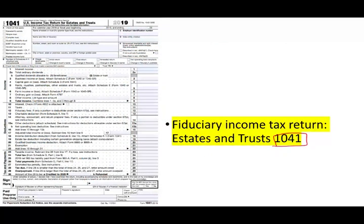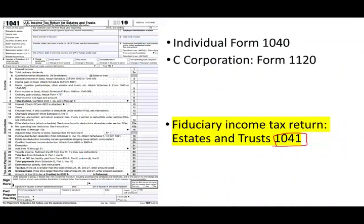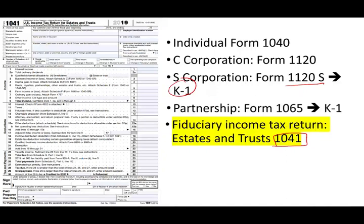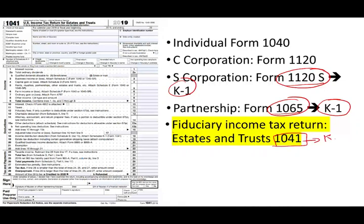So where does Form 1041 — estate and trust — fit in our tax life? When we are alive as individuals, we fill out Form 1040 yearly. A C corporation files Form 1120; an S corporation files Form 1120-S and everything flows to the shareholder through a K-1. A partnership files Form 1065 — also a flow-through entity — and everything goes to the partners on a K-1. Form 1041 is very similar to Form 1065 and Form 1120-S: it's a conduit, a flow-through entity, so everything from 1041 goes to K-1s — and the K-1 recipients are the beneficiaries.